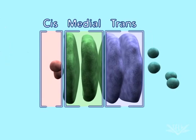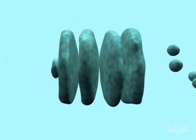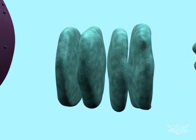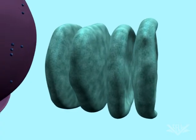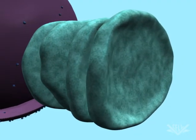Meanwhile, one of the medial cisternae migrates and becomes the new trans-cisterna. Collectively, this process is known as the cis-maturation model.